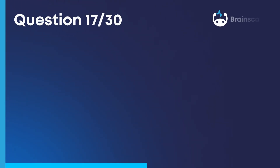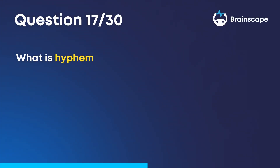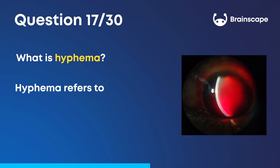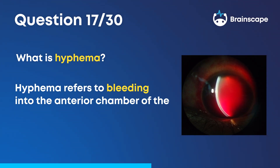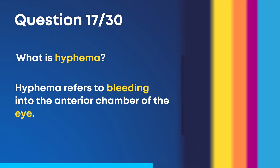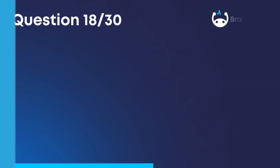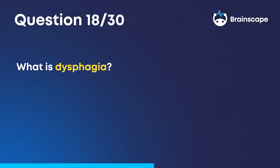Question 17. What is hyphema? Hyphema refers to bleeding into the anterior chamber of the eye. Question 18. What is dysphagia? Difficulty swallowing.